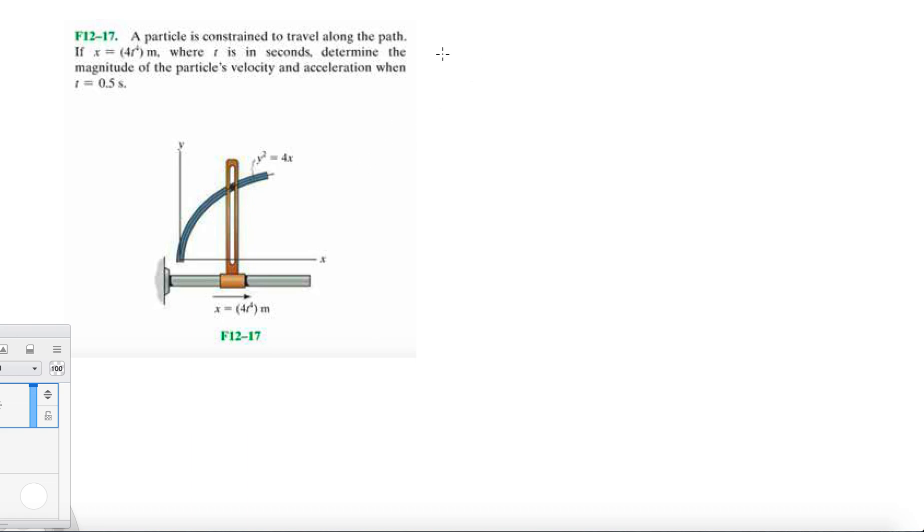We're given the position function in the x direction which is 4t to the fourth, and we're given y squared equals 4x. So basically we're given our y equation y squared equals 4x.